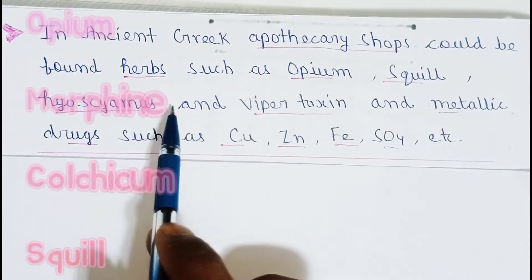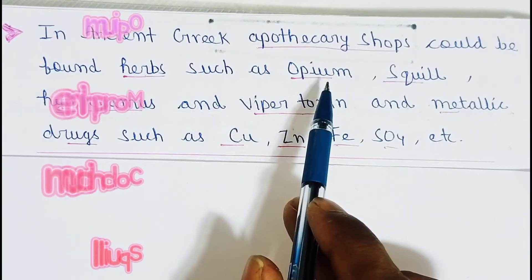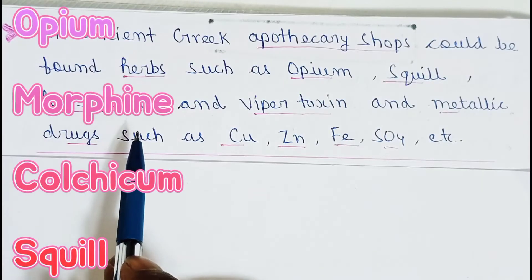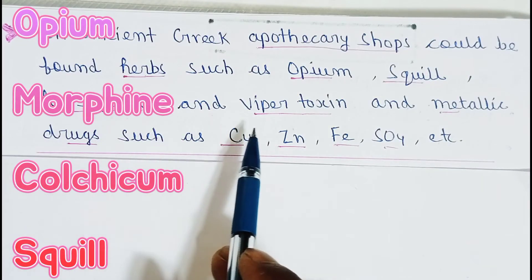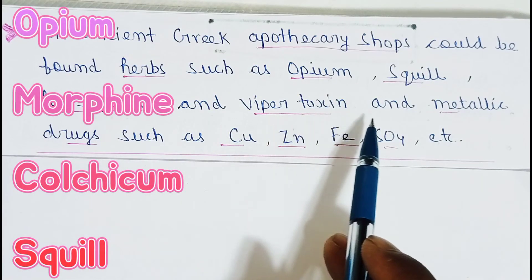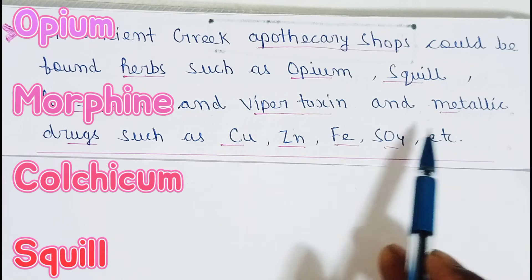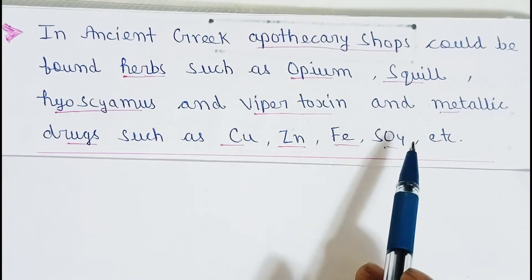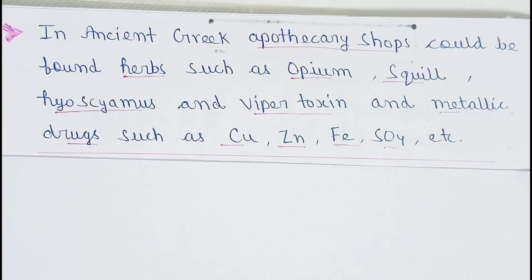In ancient Greek apothecary shops — apothecary means medicinal shops — herbs such as opium, squill, hyoscamus, and viper toxins could be found, along with metallic drugs such as copper, zinc, iron, and sulfate, etc.